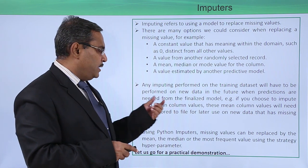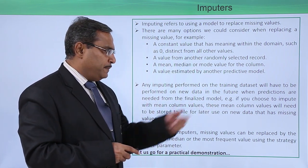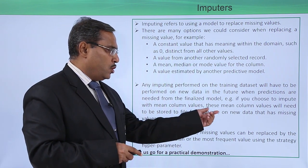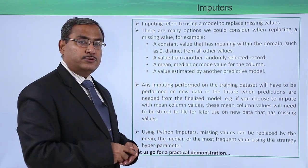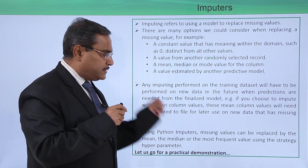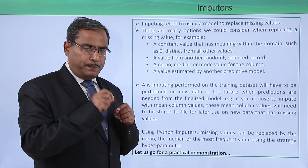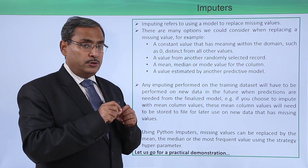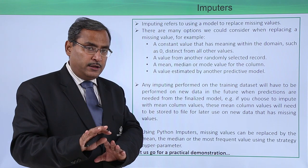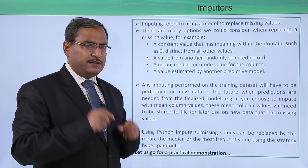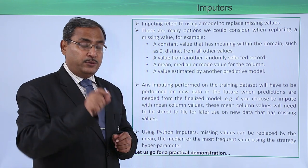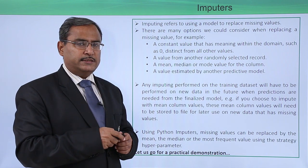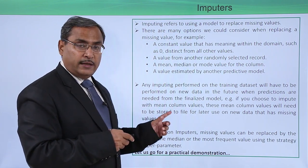For example, if you choose to impute with minimum column values, these min column values will need to be stored to a file for later use on new data that has missing values. If we decide to fill missing values using the column minimum, those min values for respective columns must be saved so that when new tuples come with missing values, we can pick up the respective min value from that file to replace them.